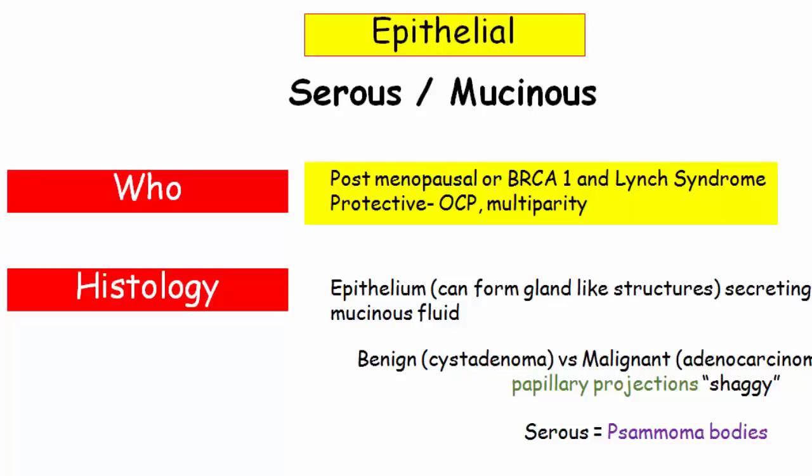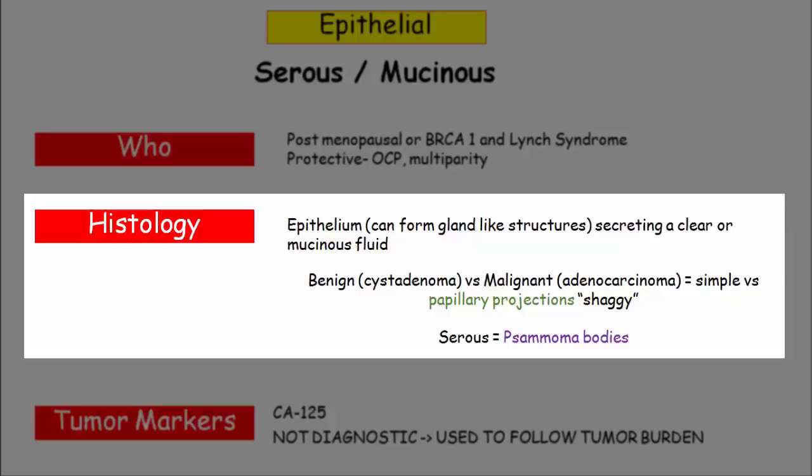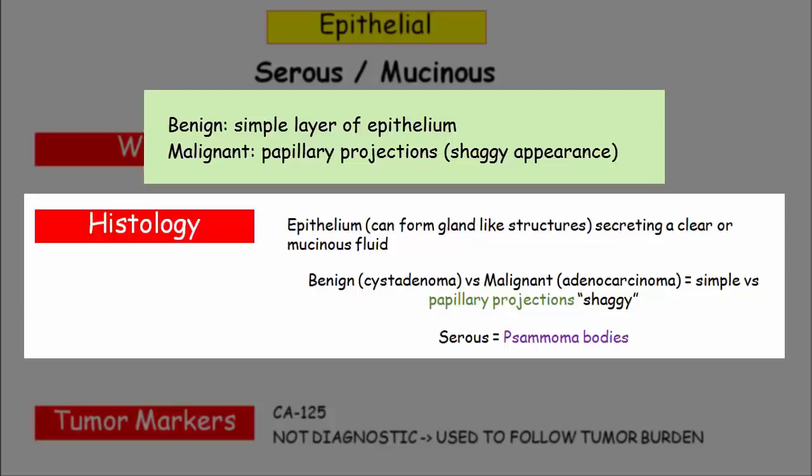Now to the money — the pathology. These tumors are going to be cysts lined with epithelial cells filled with either a clear fluid or a mucus, as the name suggests. The histology can also help you determine benign versus malignant tumors. Benign tumors will have a simple layer of epithelium, while malignant tumors will be described as having papillary projections or a shaggy appearance.